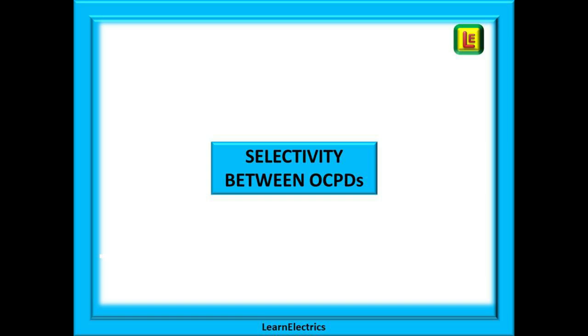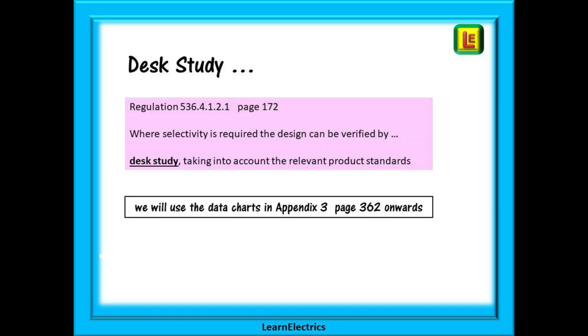Looking now at selectivity between over current protective devices regulation 536.4.1.2.1 on page 172 tells us that where selectivity is required the design can be verified by a desk study taking into account the relevant product standards. Desk study then is just sitting down with a pencil some data about the fuses or breakers and comparing the response times to overload currents. It's not complicated and we will use the data charts in appendix 3 on page 362 onwards.